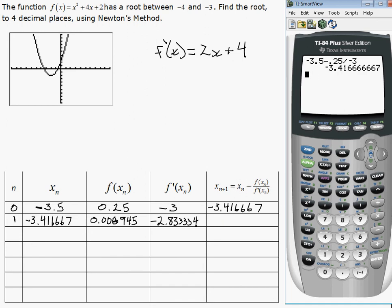And do this, negative 3.416667 minus 0.006945 divided by negative 2.833334. So that gives us that for an answer. So there's our next guess.